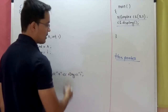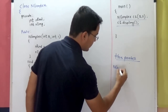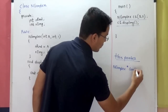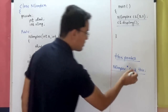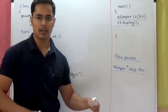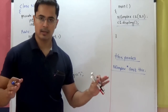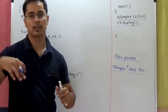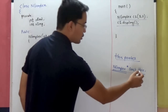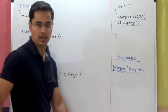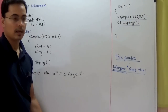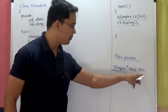For this class NComplex, the this pointer will be of type NComplex* const — a constant pointer to NComplex. It is a constant pointer, meaning once this pointer is assigned the address of some object, you cannot reassign it to some other object. It is a pointer to class NComplex, so it will store the address of an object of NComplex type. The object which is invoking the member function — the address of that object will be stored in this.